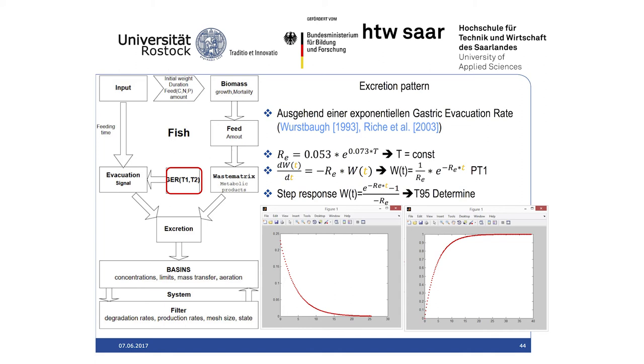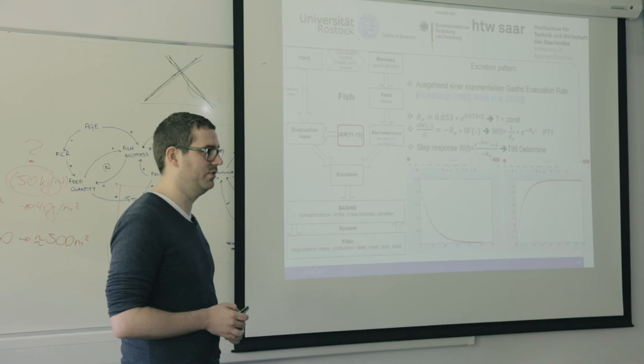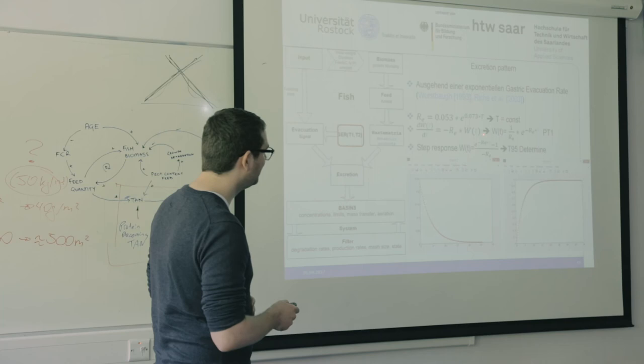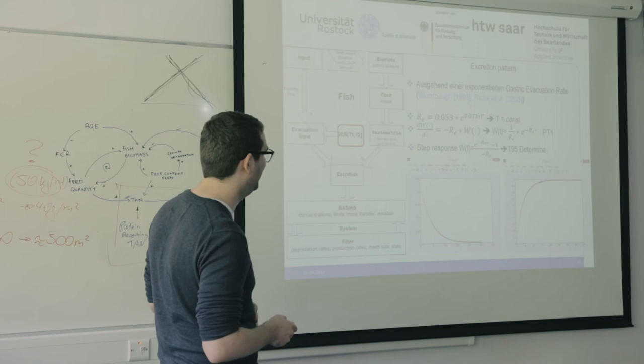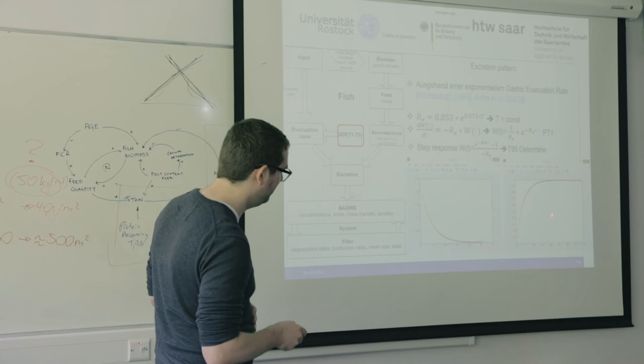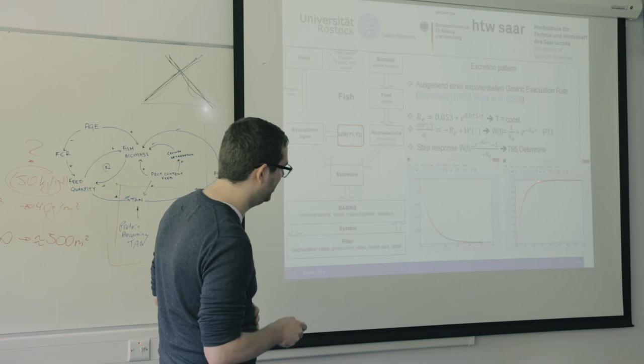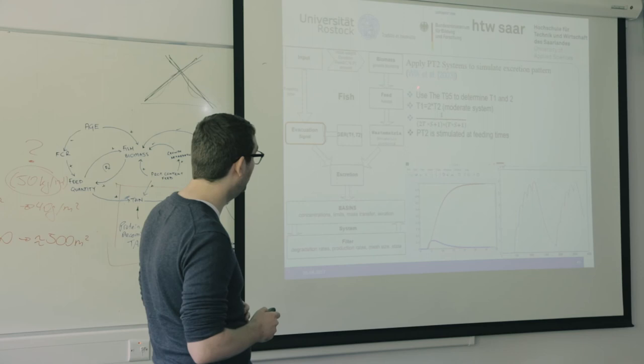I did this with models from Wolfsberg and Richie — they introduced the gastric evacuation rate. It basically tells you: if you feed them, they get the feed into the system and then discharge it in a timely pattern. If you feed them at one point, at about 20 hours they have excreted everything. I just needed the T95 — the point at which they excrete 95% of the feces.